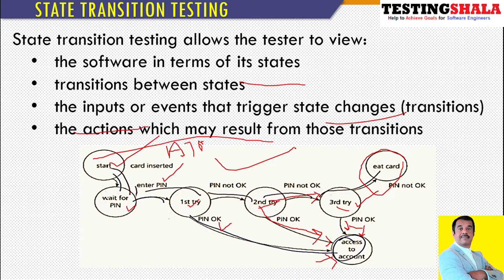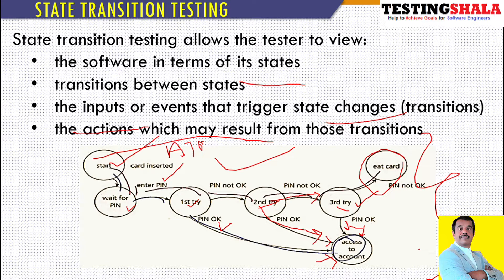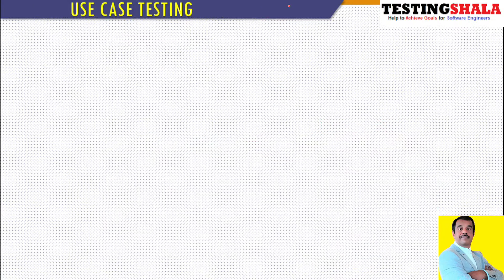If we can see here, a sequence of flows happens, a sequence of events happen, and sequence of inputs happen — and each event or input triggers a transition to another state. If any application has this kind of flow, then we should definitely apply the state transition testing technique.